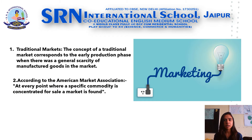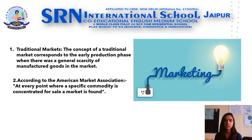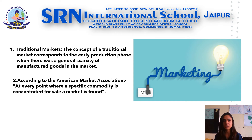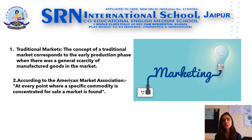The concept of market was divided into two parts, i.e. the traditional markets and the modern markets. The concept of traditional market corresponds to the early production phase when there was general scarcity of manufactured goods in the market. The phase of pre-industrial revolution world was categorized by an agriculture-cum-handicraft economy with no elaborate distribution system. The agriculturist, whether he produced corn or cotton, meat or butter, disposed of the surplus in his immediate neighborhood.